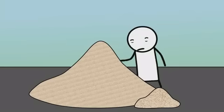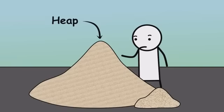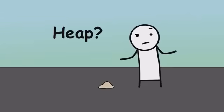The sorites paradox. If you remove one grain of sand from a heap, it's still a heap. But keep removing grains, and eventually, it's just a few specks. So, when did it stop being a heap?